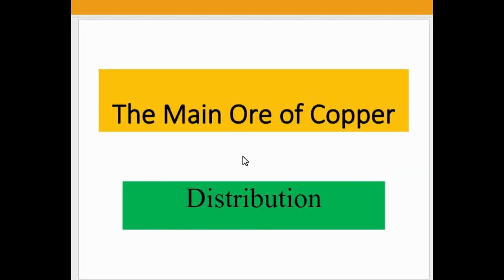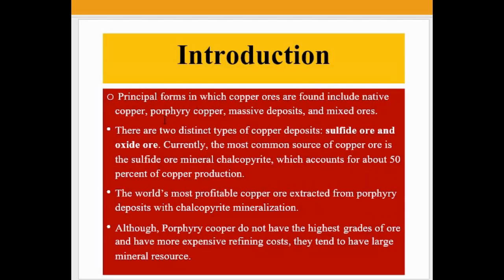Today we talk about the main ore of copper, including the distribution of copper ore. Principal forms in which copper ores are found include native copper, free copper, massive deposits, and mixed ores. There are two distinct types of copper deposits: sulfide ore and oxide ore. Currently, the most common source of copper ore is the sulfide ore mineral chalcopyrite, which accounts for about 50 percent of copper production.